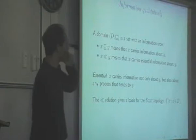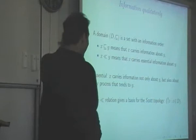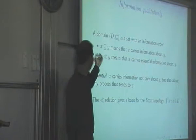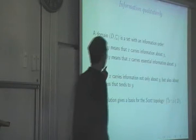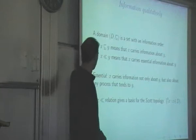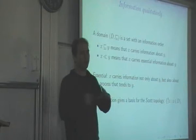The view in domain theory and measurement is that you have a qualitative idea about information, which is expressed by the order. From the order, called the information order, we derive a subrelation which is called approximation. The information order means something like X carries information about Y, and approximation means X actually carries essential information about Y. One of the things we like most about it is that it gives us a way to understand the Scott topology. The open sets in this topology are the set of things that are all approximated by some element.